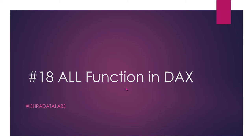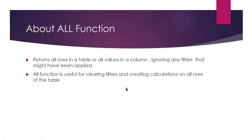Let's look at the definition first, then we'll see the demo. So ALL returns all rows in a table or values in a column, ignoring any filters that might have been applied. It will return all the rows in a table, and if any filter is applied to a column or table, that filter will be ignored - the filter won't apply.